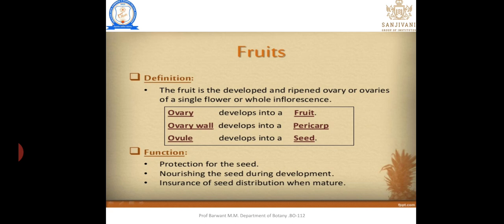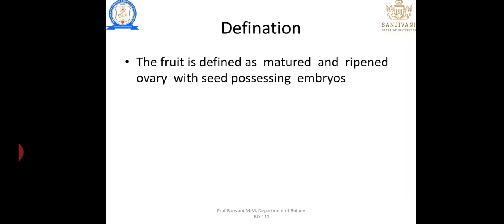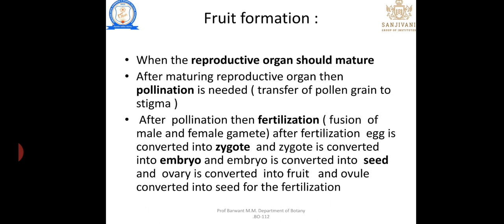Fruit is developed from the ripened ovary of a single flower or the whole inflorescence. The ovary wall develops into pericarp and the ovule develops into seed. The functions of fruit are: protection of the seed, nourishment of the seed during development, and insurance of seed distribution when matured. The fruit is defined as the mature ripe ovary possessing the embryo.